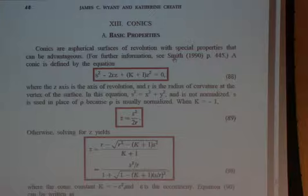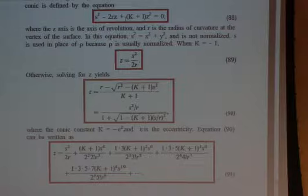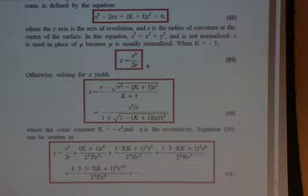If we have the case that K equals minus 1, I'll just look at this curve here — these are some surfaces for different Ks. If K equals minus 1, we call it a parabola. So if K is minus 1, this equation becomes pretty easy to solve for Z. Z equals S squared — X squared plus Y squared — over 2R. That would be the sag for the parabola.